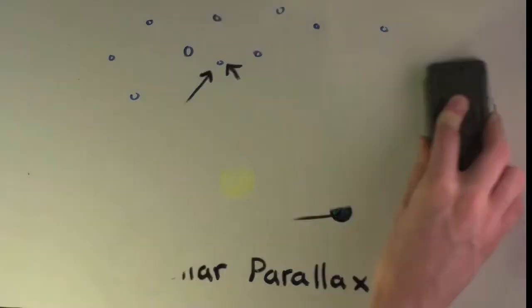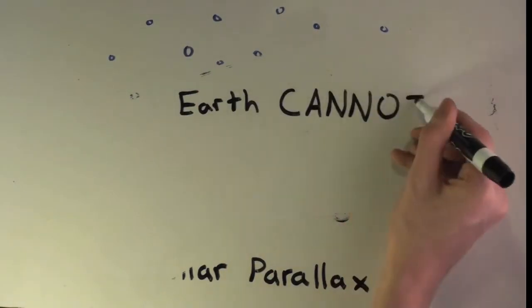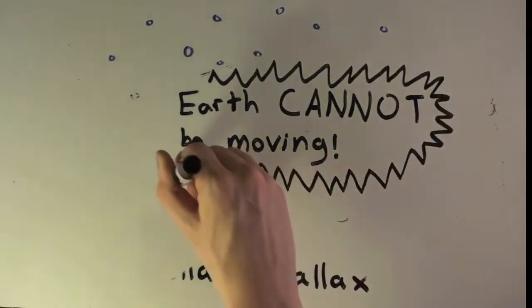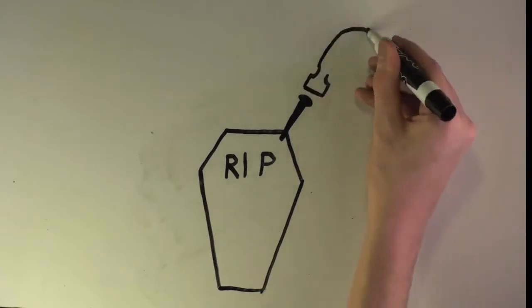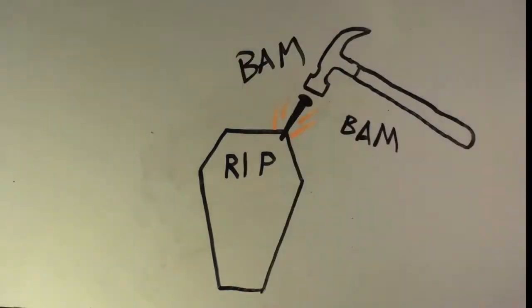However, stars did not appear to move. Therefore, the Earth could not be moving. This argument seemed to put a nail in the coffin of heliocentrism.